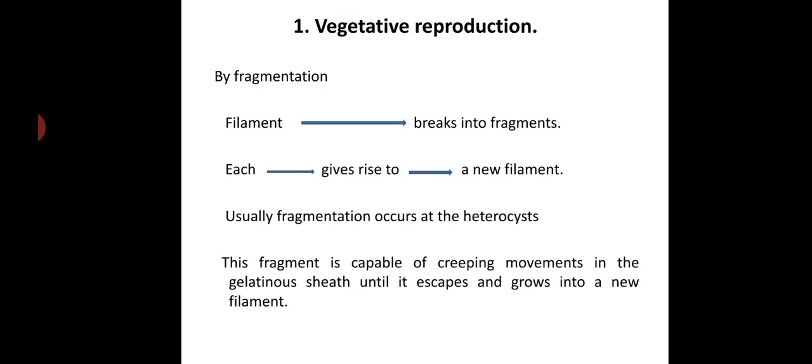Vegetative reproduction takes place by means of fragmentation. The filament breaks into fragments. Each fragment gives rise to a new filament. Usually, fragmentation occurs at the heterocysts. This fragment is capable of creeping movements in the gelatinous sheath. This gelatinous sheath protects the filaments from high temperature, overcoming unfavorable conditions until it escapes and grows into a new filament.